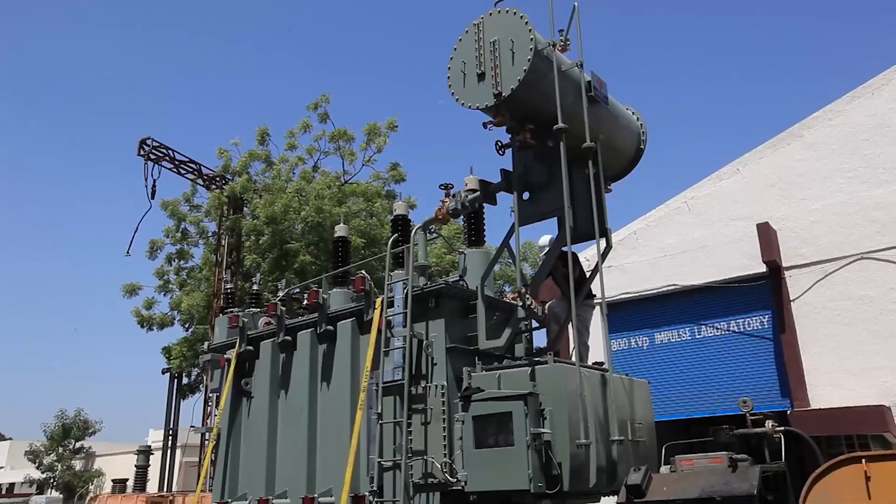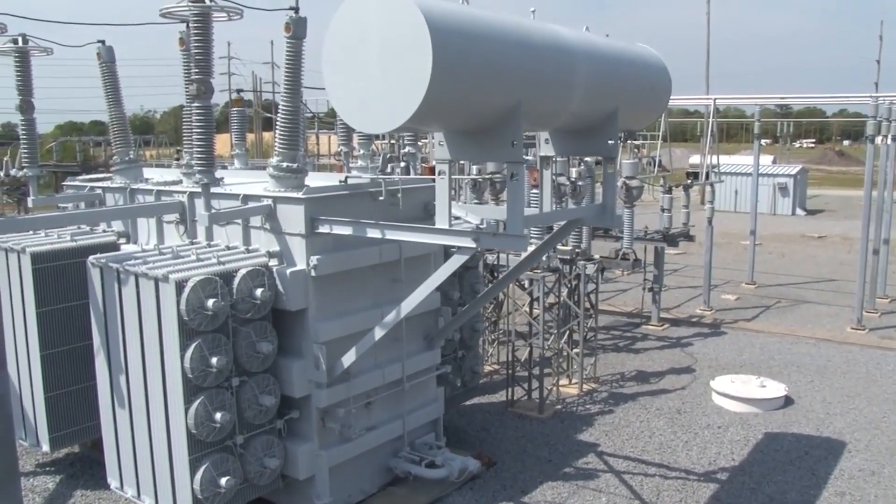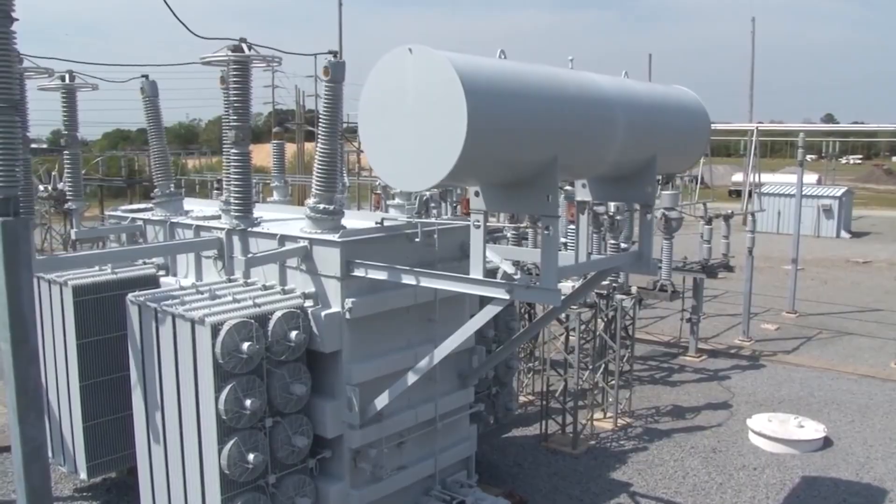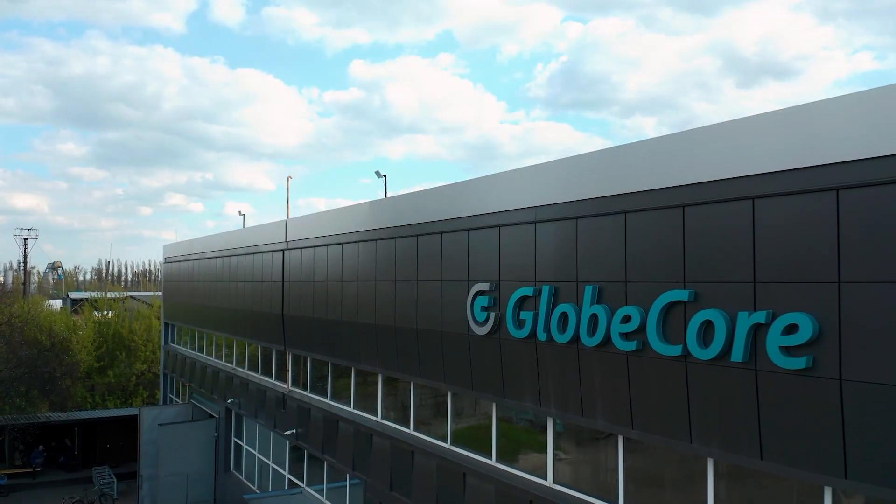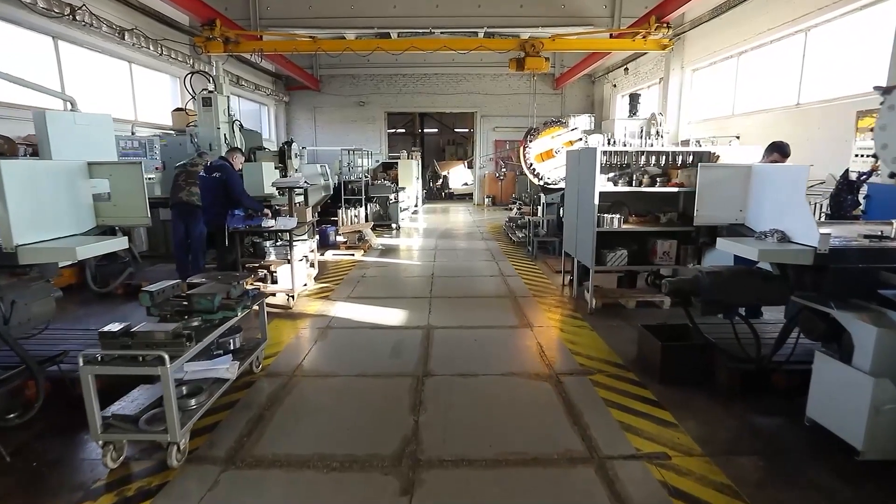Depending on where the transformer has to be serviced, the dehydration of the insulation is carried out with or without removing the windings. GlobeCore has developed technologies and equipment for drying the solid insulation of transformers, which are used in both cases.